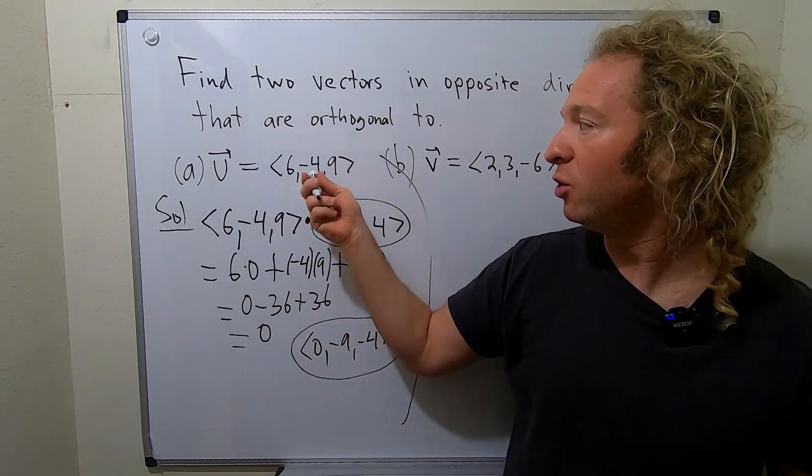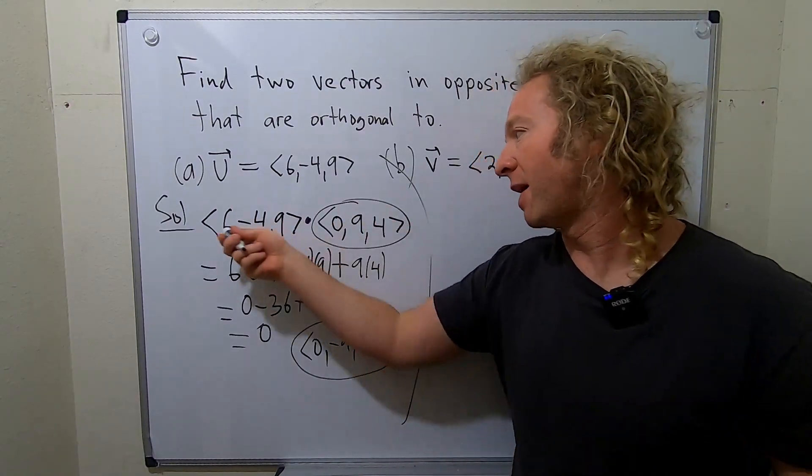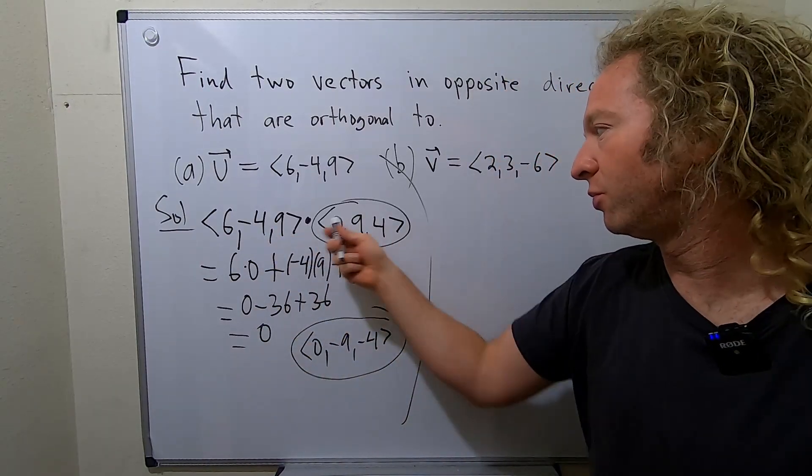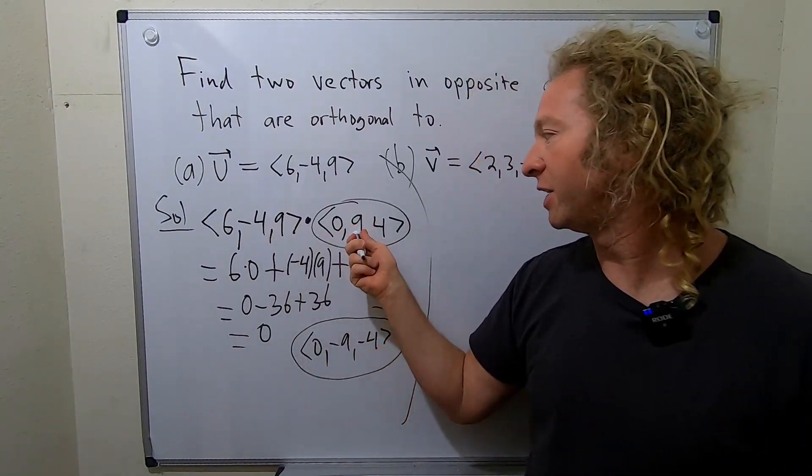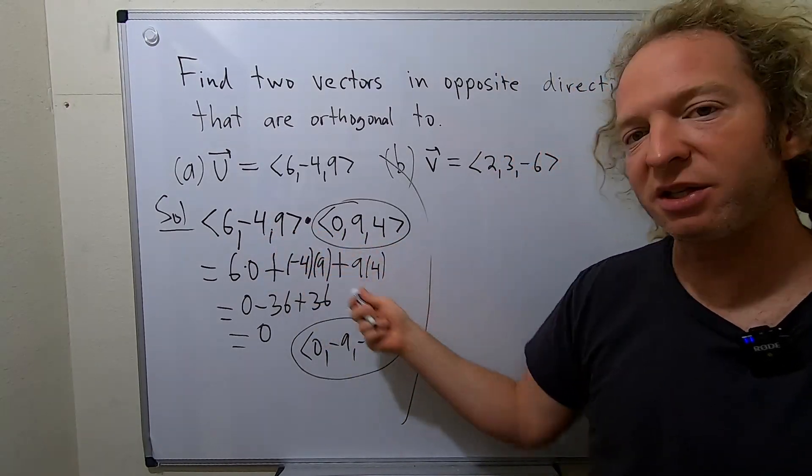So again recap. You want a vector that when you dot it with this you get 0. So I just got rid of the 6. I saw the negative sign and I saw it as an opportunity to get rid of stuff. So I put a 9 here and a 4 here because then this would give you negative 36. This gives you 36 and it goes away.